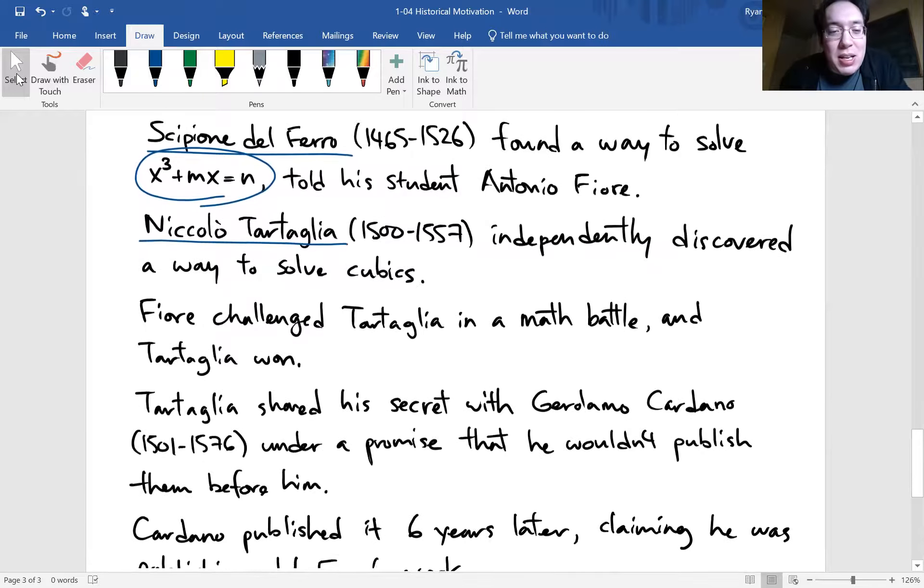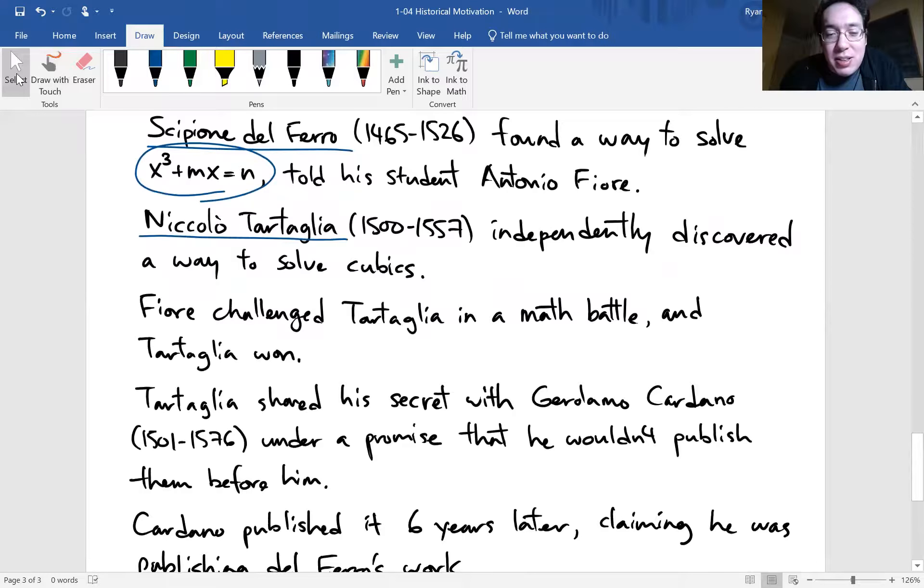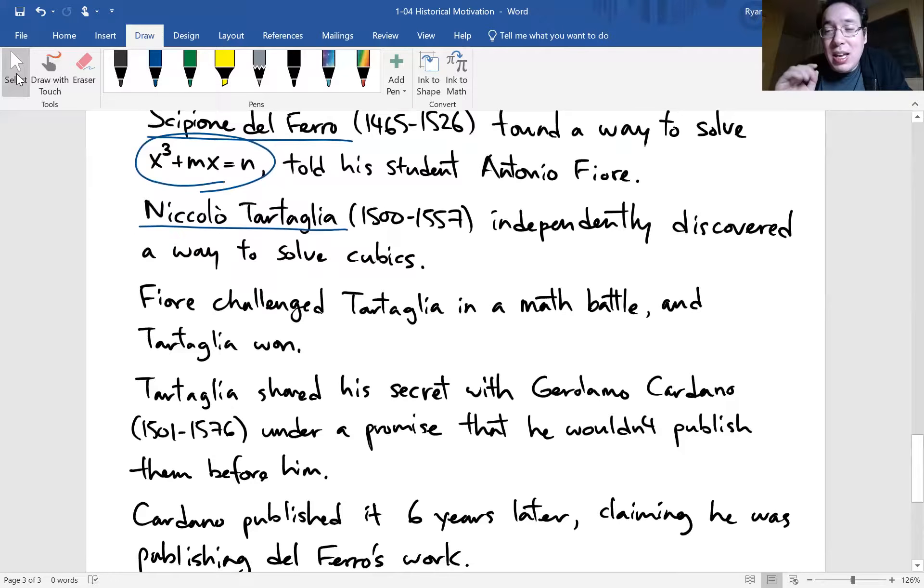So Tartaglia won this math battle. So after that, this does matter in the later part. Tartaglia shared his secret cubic formula with Gerolamo Cardano. So this is where Cardano comes into play. Tartaglia shares it but only under the condition that he would not publish this formula before him, right? So he wanted to get the credit for it. He shared it but he didn't want Cardano to spread it.